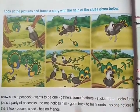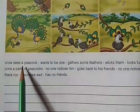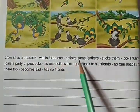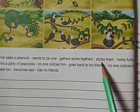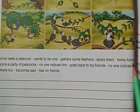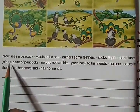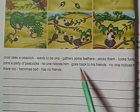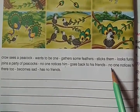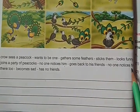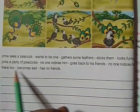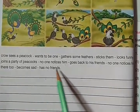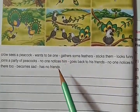Let us see the clues now. Crow sees a peacock, wants to be one, gathers some feathers, sticks them, looks funny, joins a party of peacocks, no one notices him, goes back to his friends, no one notices him there too, becomes sad, has no friends. Using these clues, let us write the story.